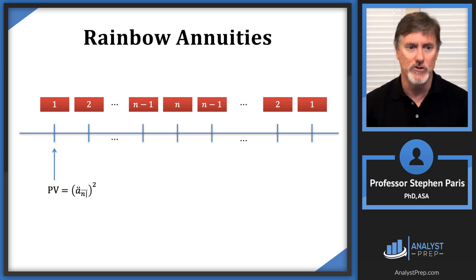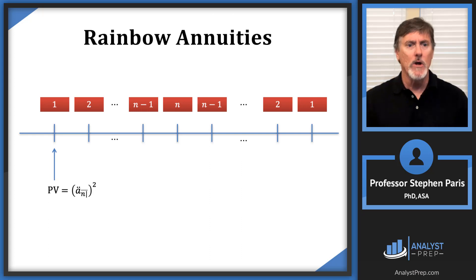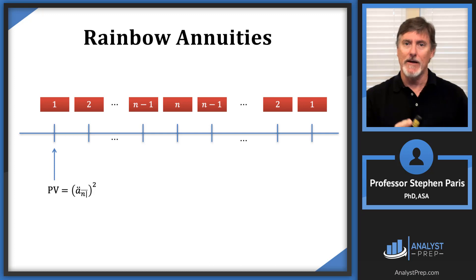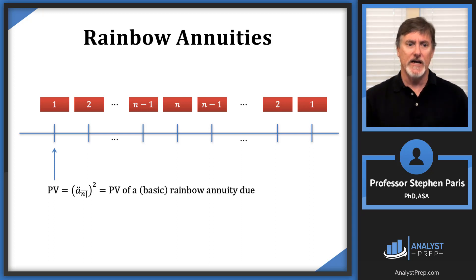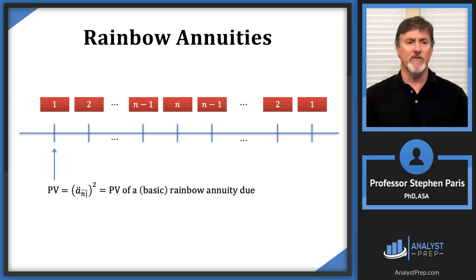It's not immediately clear why that's true, but that's just the punchline. You have to keep in mind what the n value is: n is the peak of this rainbow annuity, so the payments increase up to n and then decrease back down to 1. In words, ä_angle_n squared is the present value of this basic rainbow annuity-due. That's a very useful formula and the one I encourage you to remember.